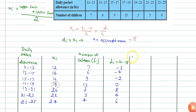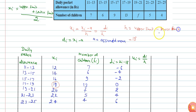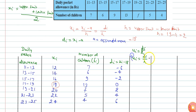We can calculate ui, which is Di divided by h. h is the interval size: upper limit minus lower limit, so 13 minus 11 equals 2. Therefore h equals 2, and ui equals Di divided by 2. The ui values are: minus 3, minus 2, minus 1, 0, 1, 2, and 3. Now in this column I can calculate the product Fi times ui.